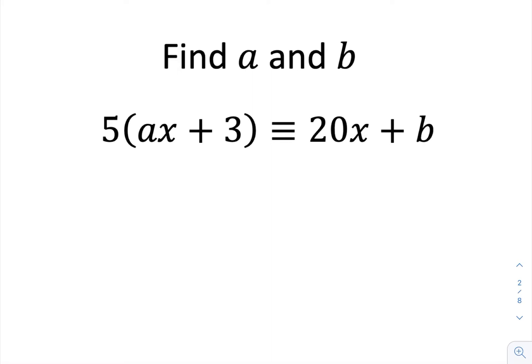So if I expand the left-hand side, I will get 5ax plus 15, and that's identical to 20x plus b. Now what we're going to do is what's called equating coefficients, which is that if I look on both sides, I can see that there are two x terms.